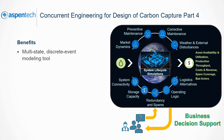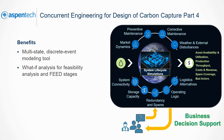Aspen Fidelis is a multi-state, discrete event modeling tool. Its versatility enables us to simulate the reliability, availability, and maintainability, or RAM, of various systems. During feasibility analysis and feed stages, Aspen Fidelis uses what-if analyses to evaluate system risks and uncertainties. It provides performance insights for a group of assets across multiple life cycles to optimize production, mitigate carbon, and reduce costs.